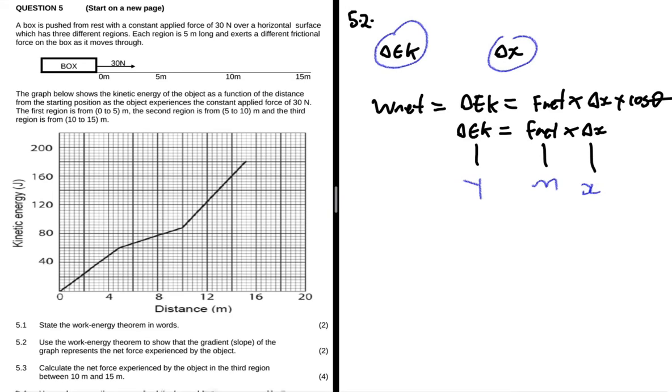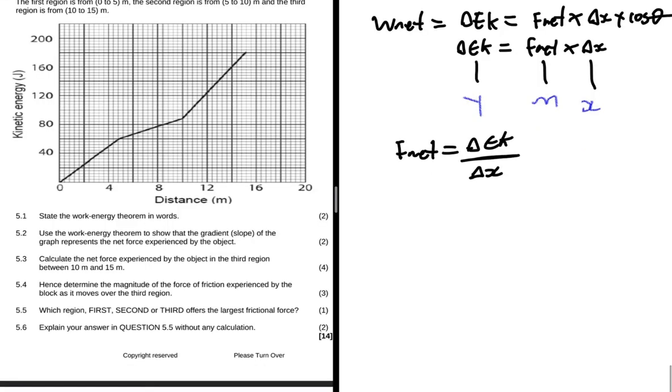Here clearly the gradient or the slope will be giving us F net. So here you come and say F net will be our gradient, which you're going to find by saying the change in EK divided by the change in distance or the change in x. This is honestly a very strange question, I've never come across anything like this before. Anyway, let's move to 5.3.